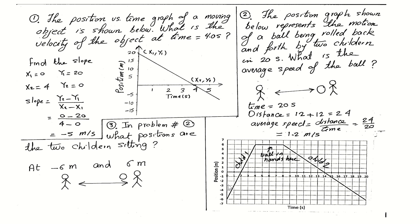To find the total distance: from negative six to zero is 6 meters, and from zero to six is another 6 meters. The total distance between the two children is 24 meters. Average speed equals total distance divided by total time: 24 divided by 20 equals 1.2 meters per second.